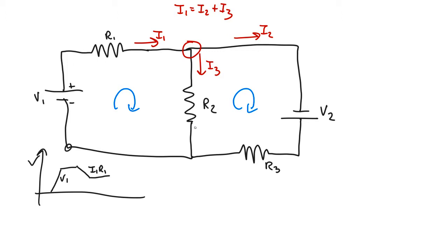And it must come back to where it started from. So that gives us the equation that V1 minus I1 R1, sorry, minus I3 R2 must sum to zero.